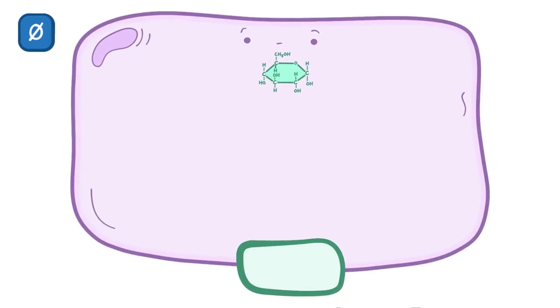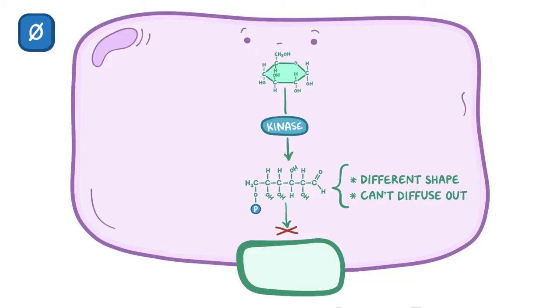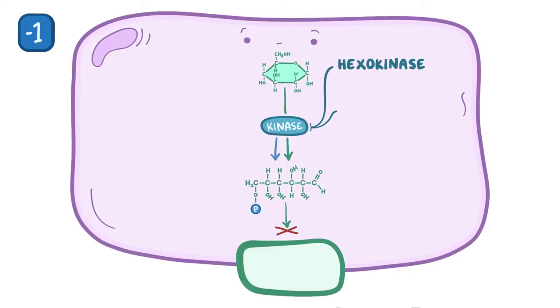Once glucose gets inside the cell, it's prevented from diffusing across the cell membrane back into the circulation by enzymes called kinases, which phosphorylate the glucose. Adding a phosphate group changes the shape of the glucose molecule, which means that it can't easily diffuse out of the cell, kind of like a criminal that's been handcuffed to the table in the interrogation room. That added phosphate comes from the breakdown of ATP into ADP and phosphate, so this initial phosphorylation step drops us to minus 1 on the energy counter. Specifically, there are two enzymes called hexokinase and glucokinase, and they both add a phosphate group to the 6th carbon in the glucose molecule, turning it into glucose-6-phosphate.